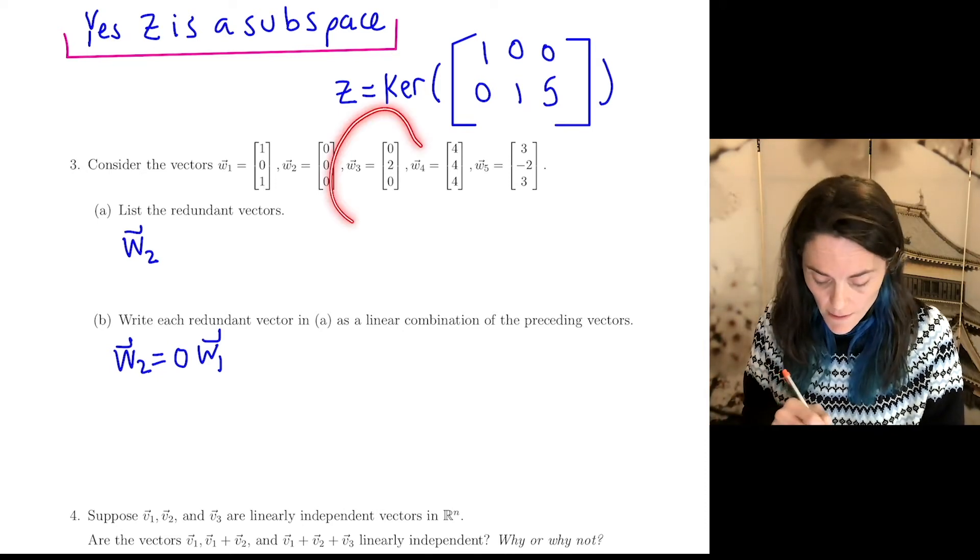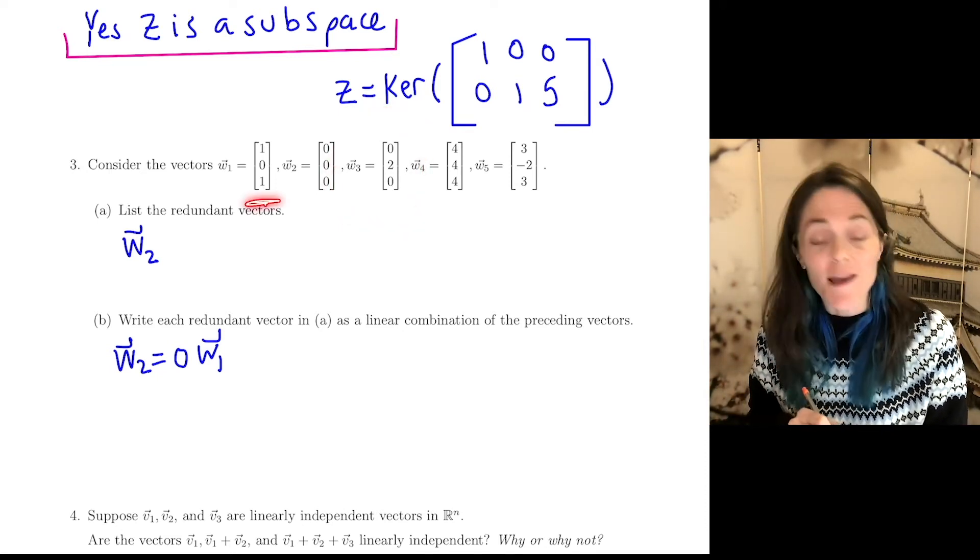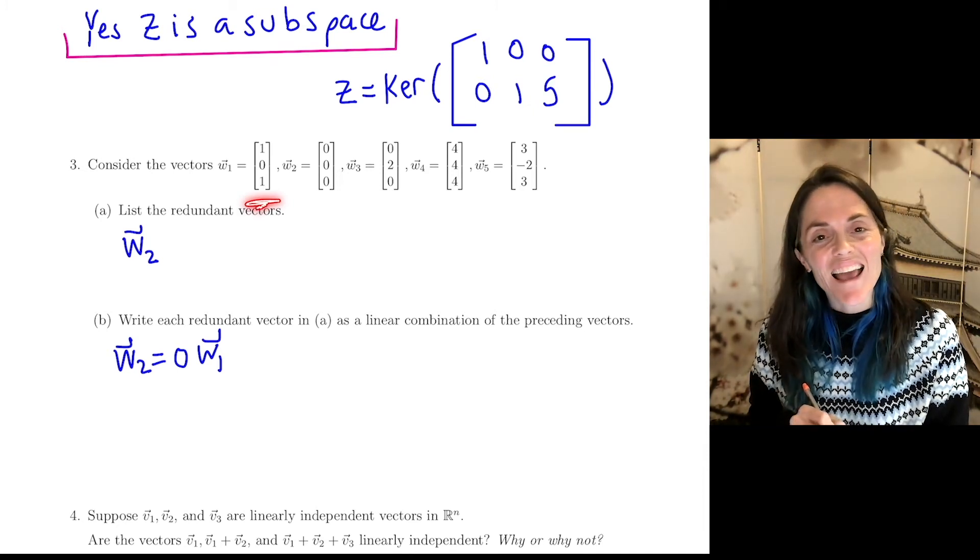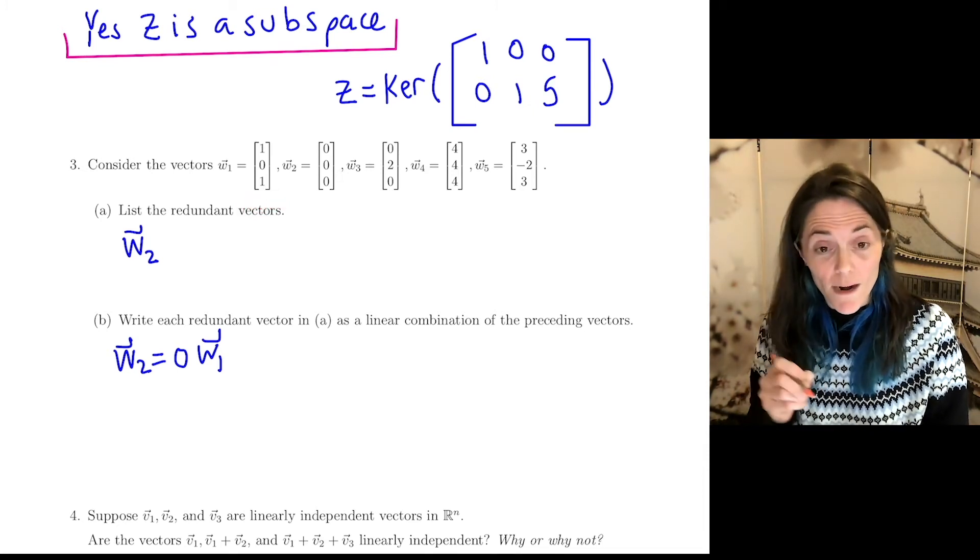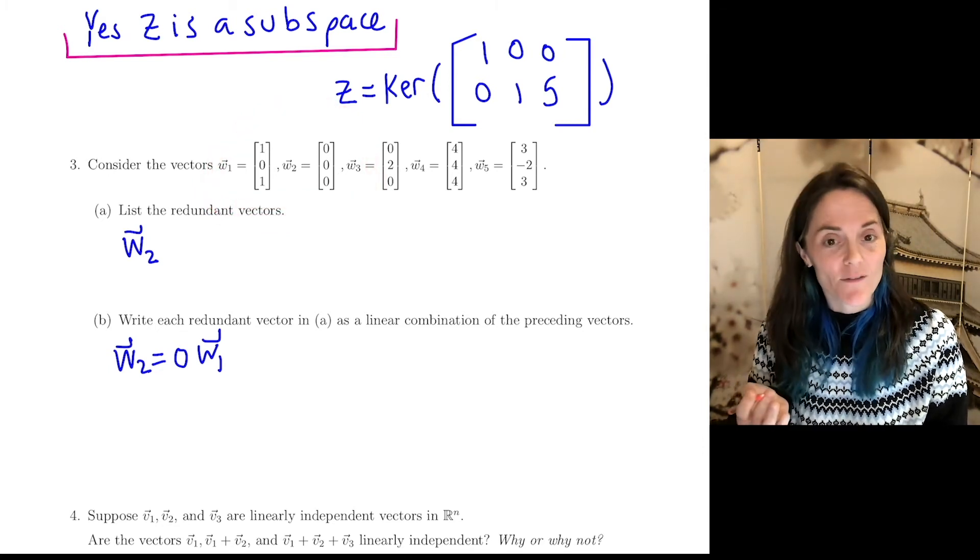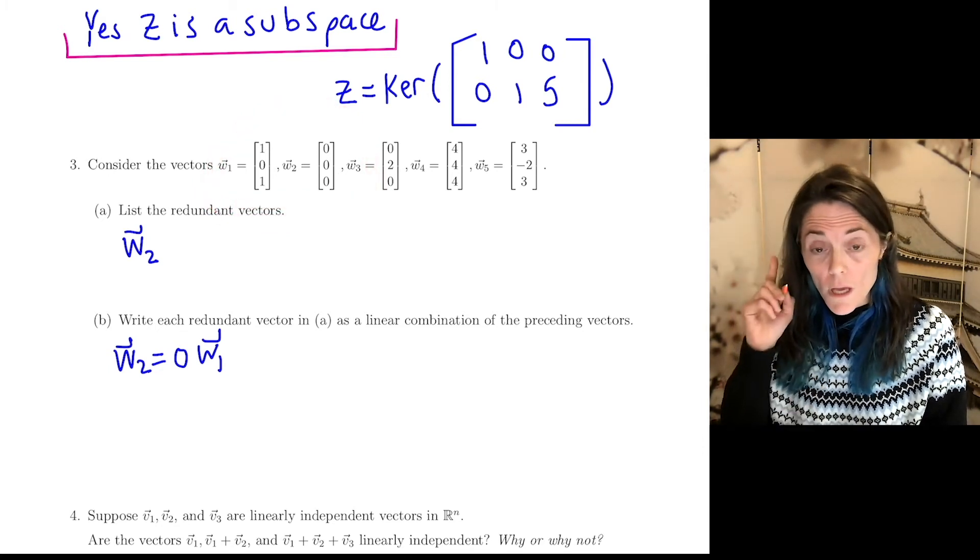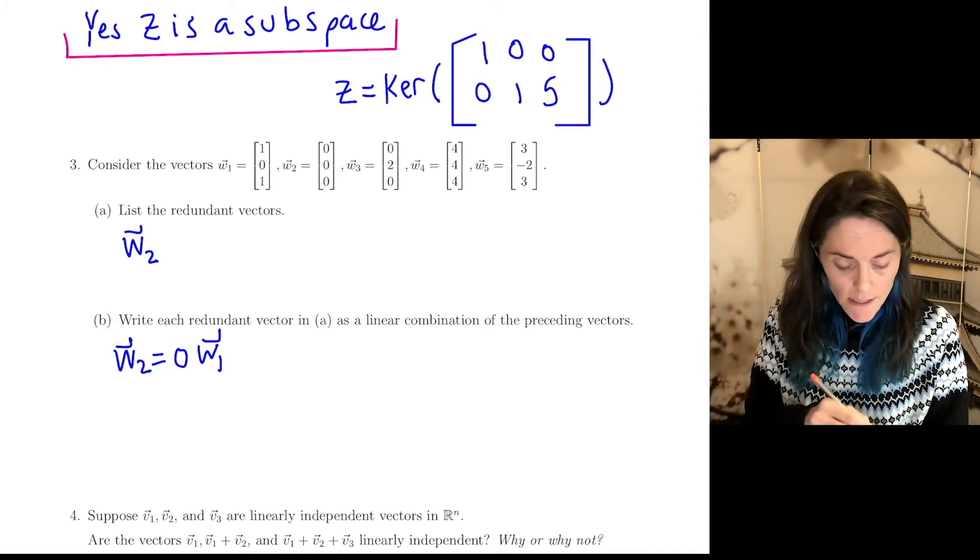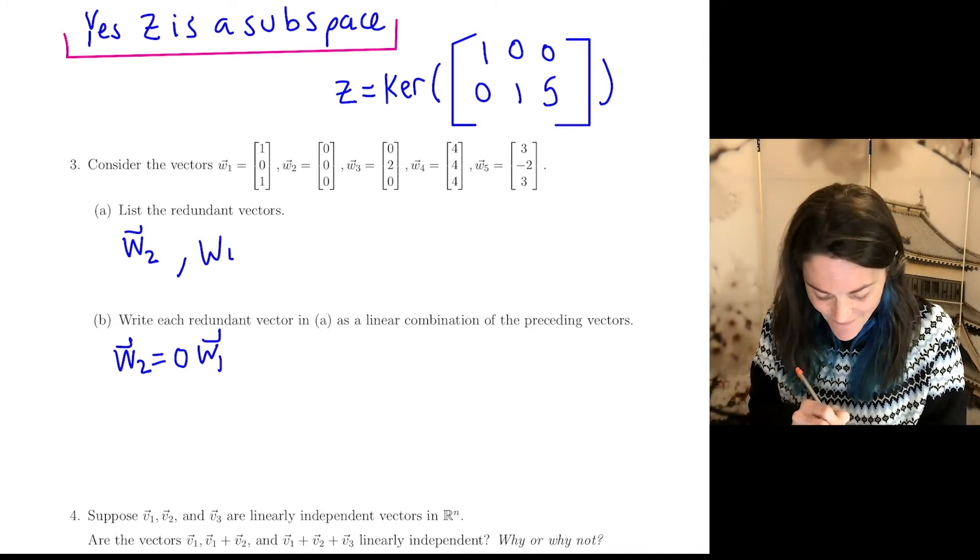Now, W3. This is okay. W3 is not a multiple of W1, and therefore, it is certainly not a linear combination of W1 and the 0 vector. W4, though, this is redundant, and also W5 is redundant.